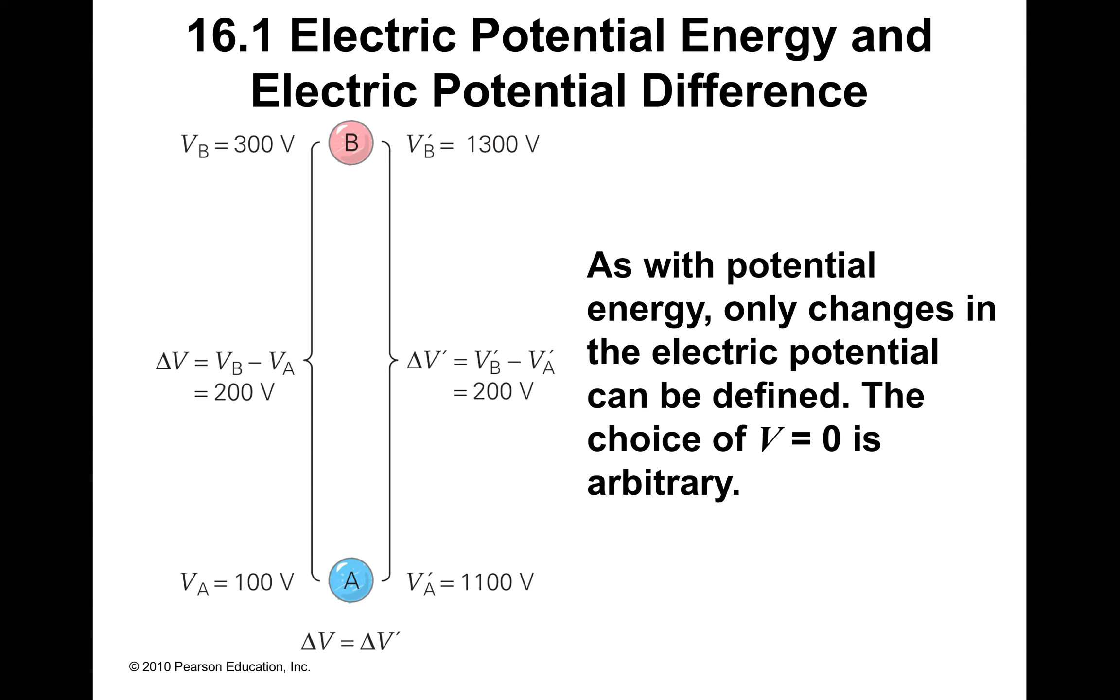So we got electric potential energy and electric potential difference. Electric potential energy - there are two different things. As with potential energy, only changes in the electric potential can be defined. In other words, gravitational potential energy that we studied in chapter one - the delta h was what we looked at, right? The difference in the height.